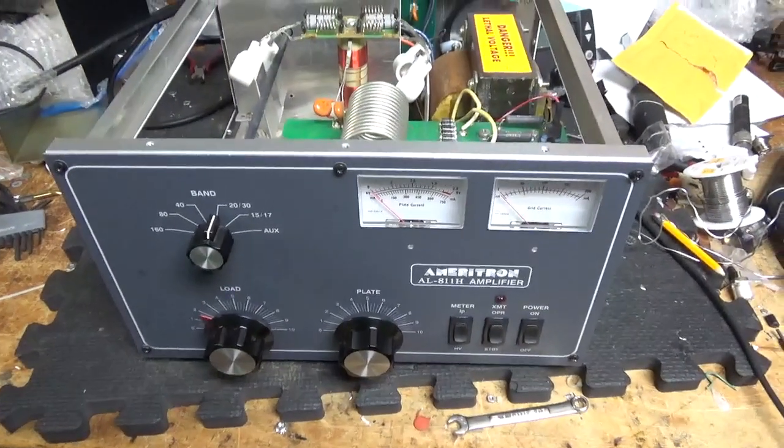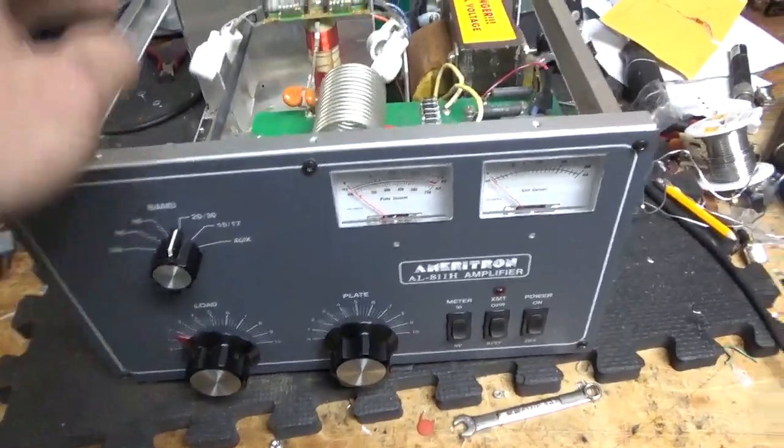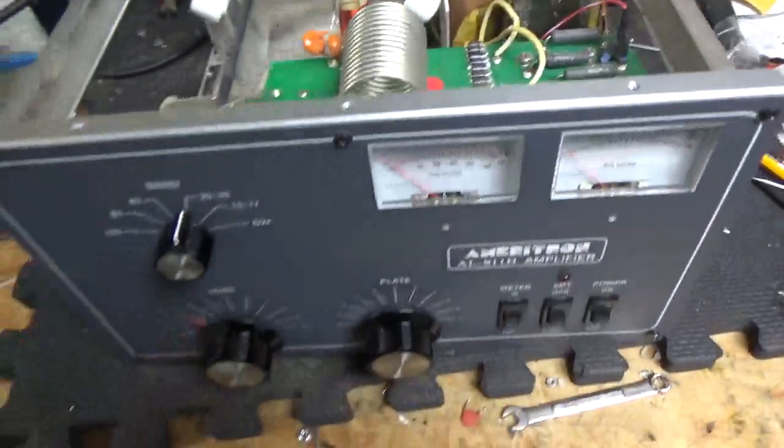Hey everybody, AmpRepairGuy.com, 203-892-4119. Another Ameritron AL-811H already has the bias mod done by Ameritron.